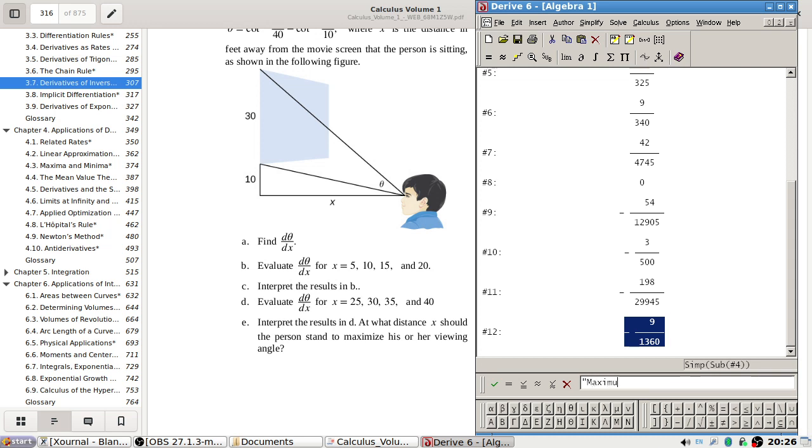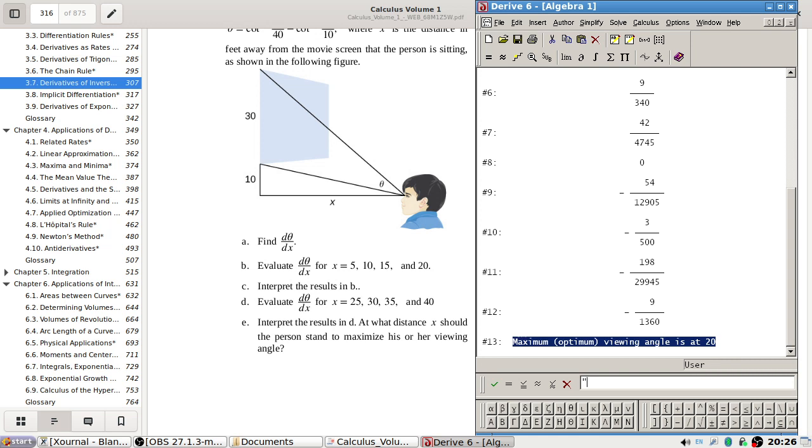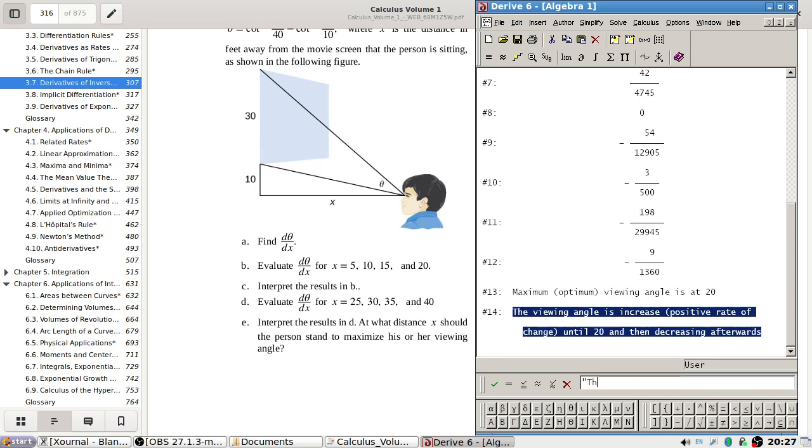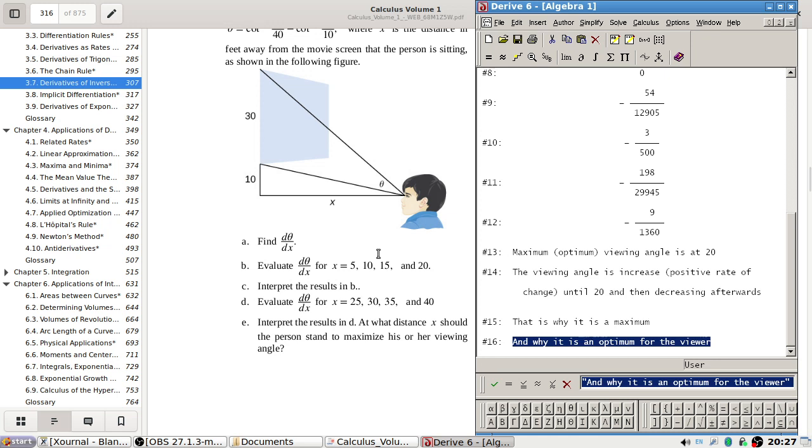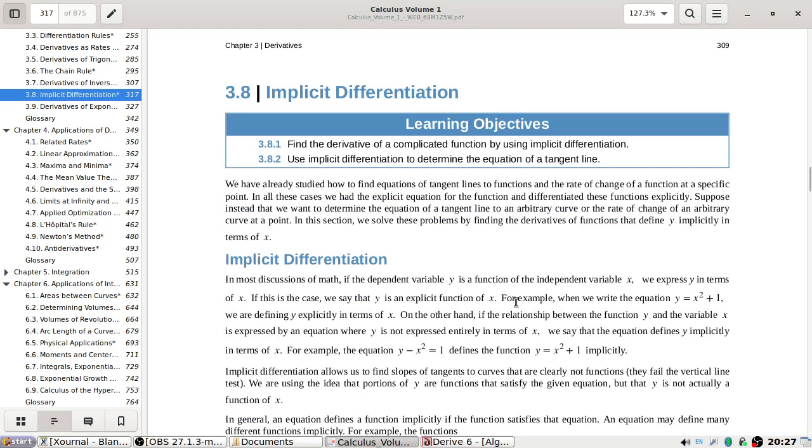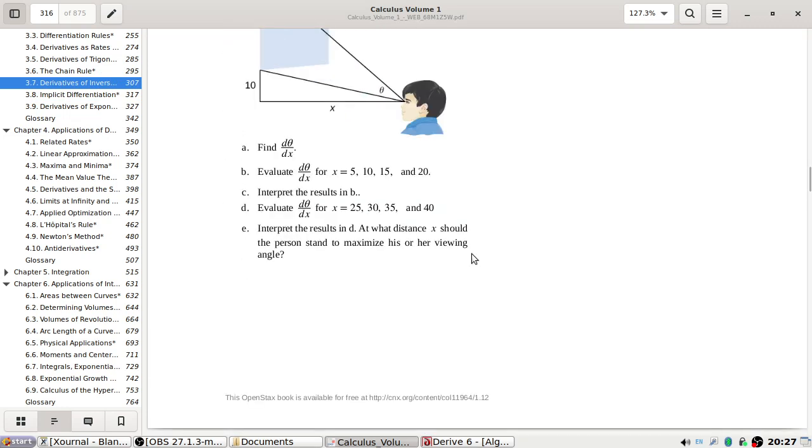Maximum, or in other words, the optimum viewing angle is at 20. The viewing angle is increasing, let's say positive rate of change until 20, and then decreasing afterwards. That is why it is a maximum and why it is an optimum for the viewer. That's an exercise down, 299 done. Hopefully no mistakes.